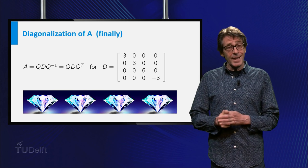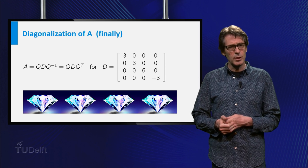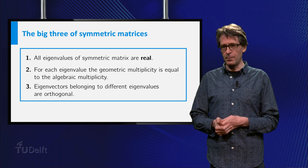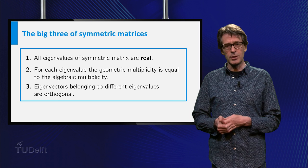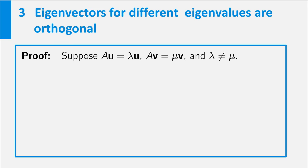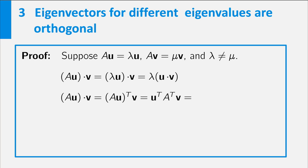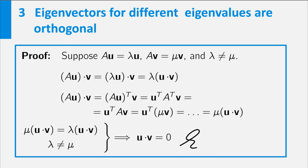Two examples is of course quite insufficient as a proof. Let's have one last look at the big three. The proof of the third property is the easiest, and I will give it here. Suppose U and V are eigenvectors for different eigenvalues lambda and mu. Then the inner product of A times U and V can be calculated in two ways: the easiest way leads to lambda times U dot V. However, using the product rule of the transpose and the symmetry of A, you see that it is also equal to mu times U dot V. Combining these two gives that U dot V equals zero, which means that U and V are orthogonal. Beautiful!